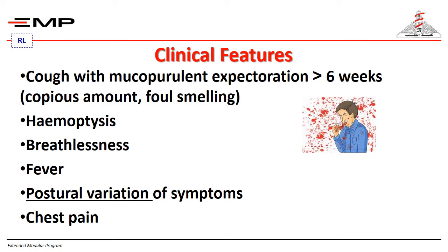The clinical features of a patient with bronchiectasis include cough with mucopurulent expectoration for more than six weeks. The patient will have copious amounts of foul-smelling sputum. They may have hemoptysis, breathlessness, and fever because of chronic infection. The characteristic symptom is postural variation — if the patient has basal bronchiectasis, they will produce a large amount of sputum when lying prone, leaning forward.